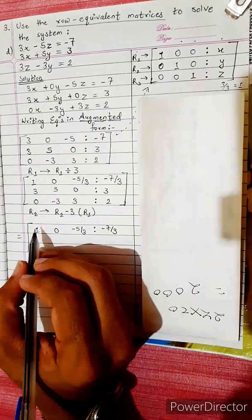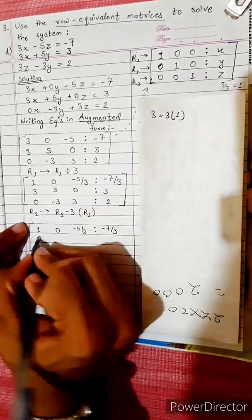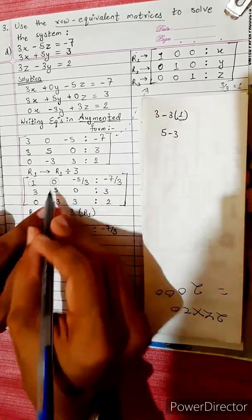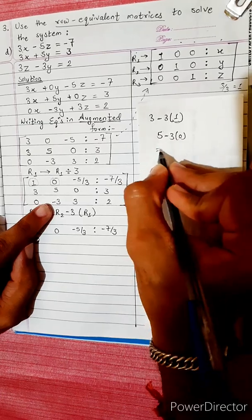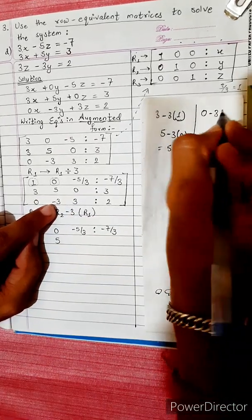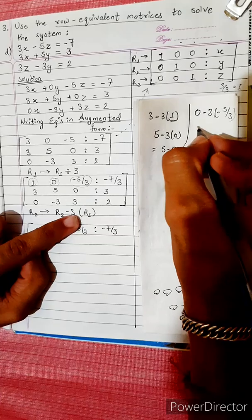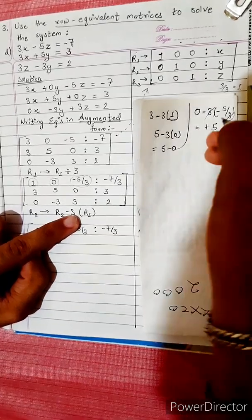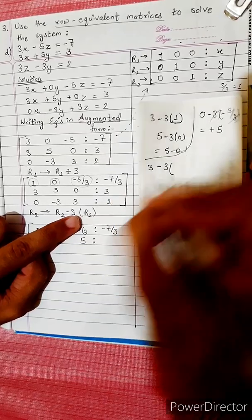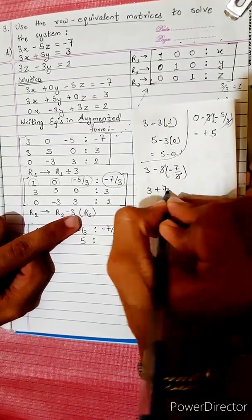Now R2 changes into R2 minus 3 times R1. R2 is [3, 5, 0 | 3]. 3 - 3×1 = 0, 5 - 3×0 = 5, 0 - 3×(-5/3) = 0 + 5 = 5, and 3 - 3×(-7/3) = 3 + 7 = 10. So the new R2 is [0, 5, 5 | 10]. R3 remains the same: [0, -3, 3 | 2].